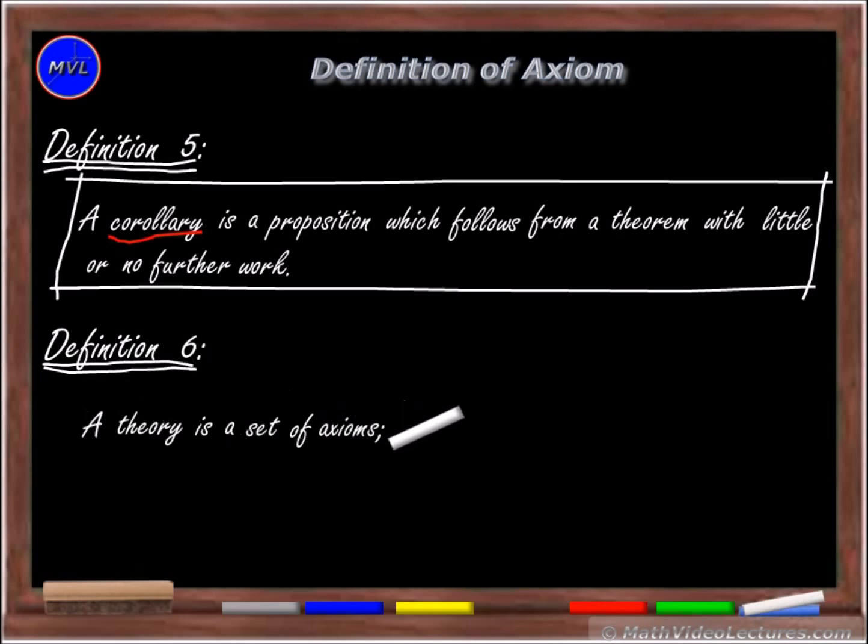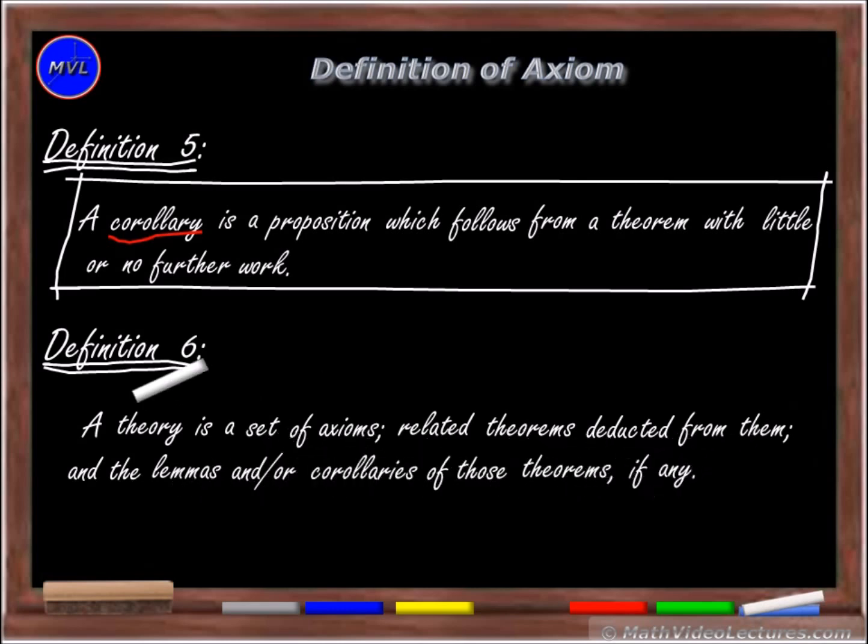And a theory is a set of axioms, related theorems deducted from them, and the lemmas and/or corollaries of those theorems, if any.